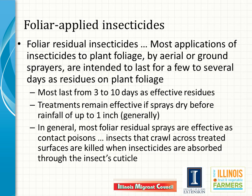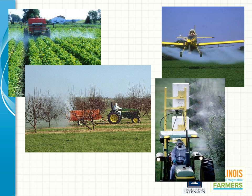Most insecticides and fungicides applied to crops last 3 to 10 days, maybe a little shorter or longer. Rainfall of over an inch removes residues and activity. Time and sunlight also allow degradation. Most insecticides used on plants are contact poisons to insects — the chemical residues rub onto the insect's cuticle, move through the waxy layers, and enter the insect via this path. They do not have to be eaten to enter the insect and cause toxicity.